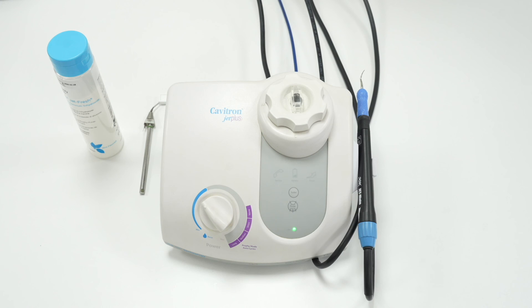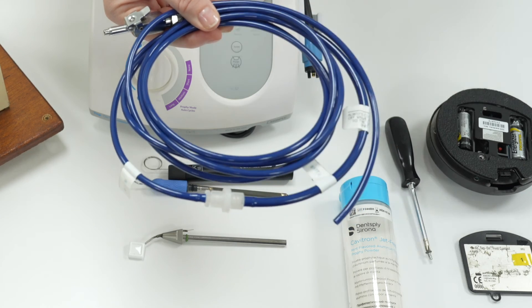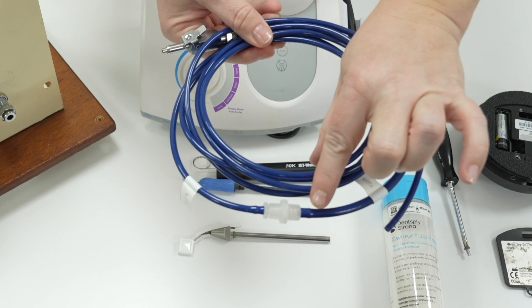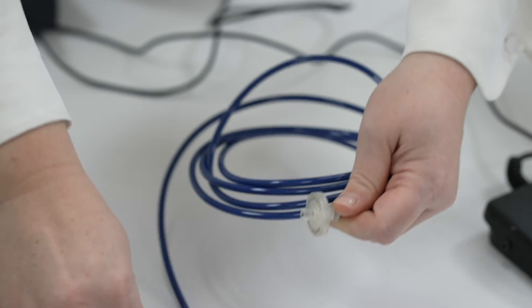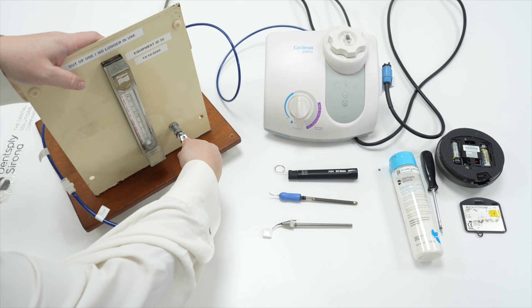To begin with, look at the filter along the water line and change it if you see any discolouration or debris. Unplug the water line at the ADEC connection and unscrew the filter and screw into place a new filter and then plug the water line back into the ADEC connection.